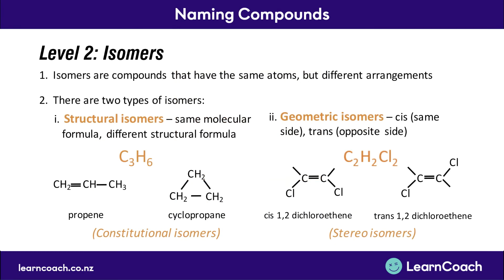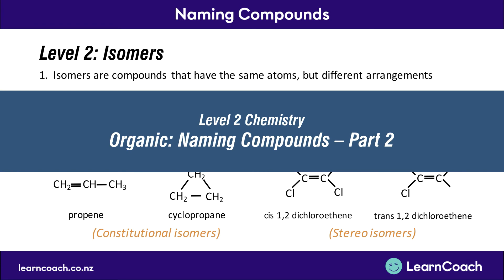Now let's go to part two: isomers. To briefly touch on last year's content, isomers are compounds that have the same atoms but arranged differently. For example, two molecules both with three carbons and six hydrogens but structured differently are called isomers. There are two types we learned about: structural isomers, also called constitutional isomers, where things are structured differently, and geometric isomers, which only happen in alkenes or alkynes with double or triple bonds. Because that bond isn't flexible, you either end up with two groups on the same side — called cis — or on opposite sides — called trans. These are geometric isomers, sometimes called stereoisomers. If you'd like extra detail, see the Level 2 organic chemistry video on naming compounds part two.